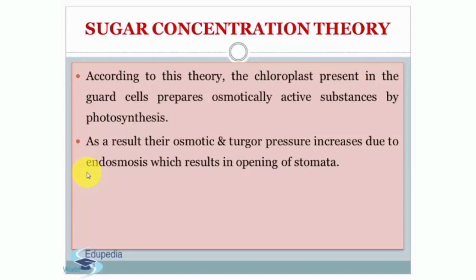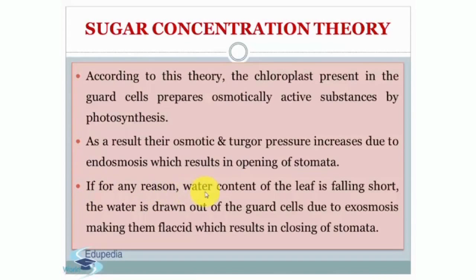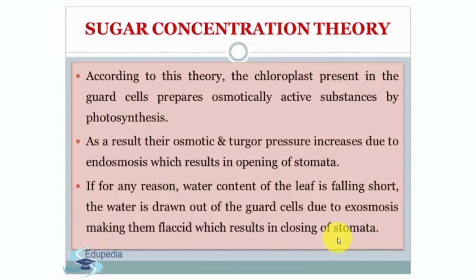Endosmosis is the inward movement of water. If for any reason the water content of the leaf is falling short, water is drawn out of the guard cells due to exosmosis — which is the outward movement of water — making them flaccid, which results in closing of stomata. So this was the sugar concentration theory.